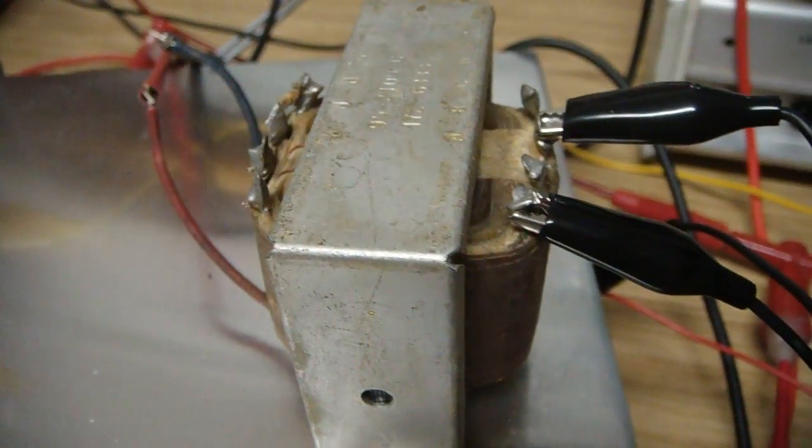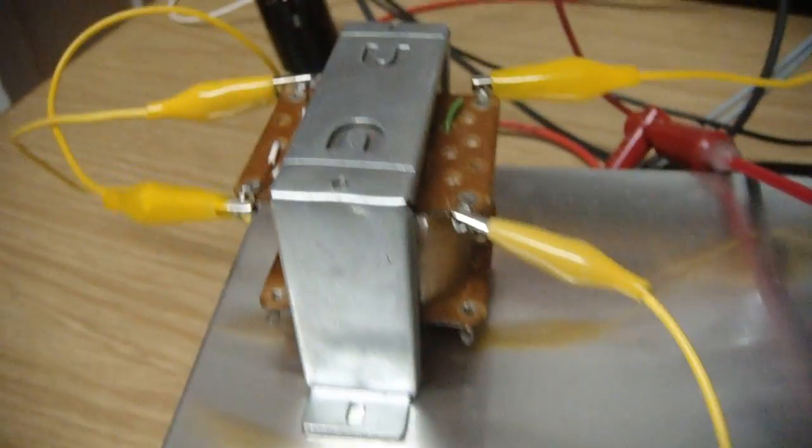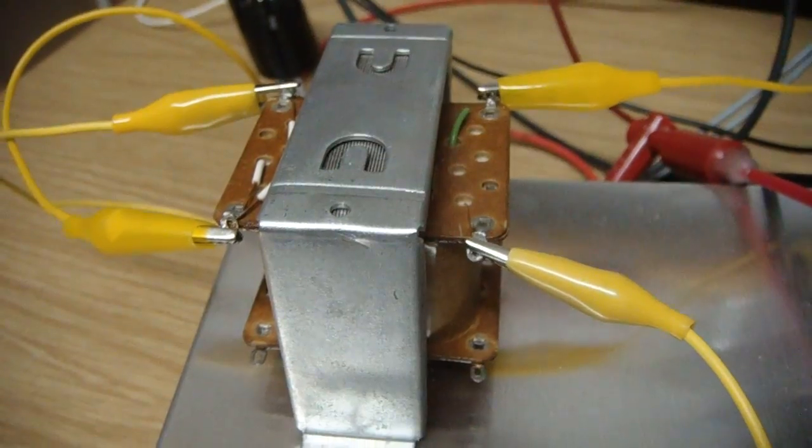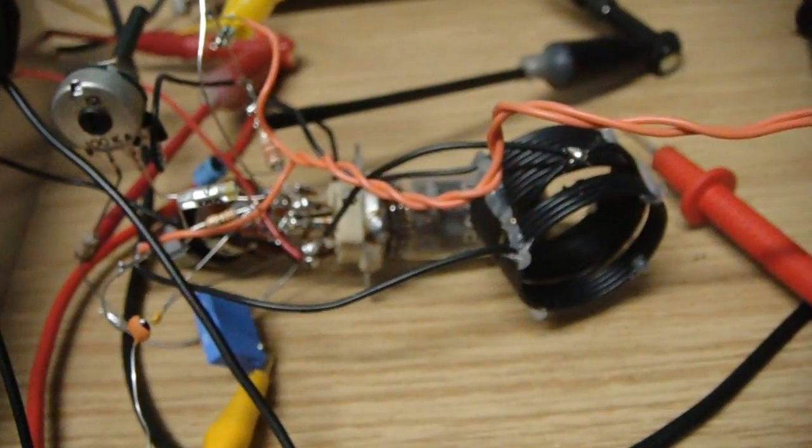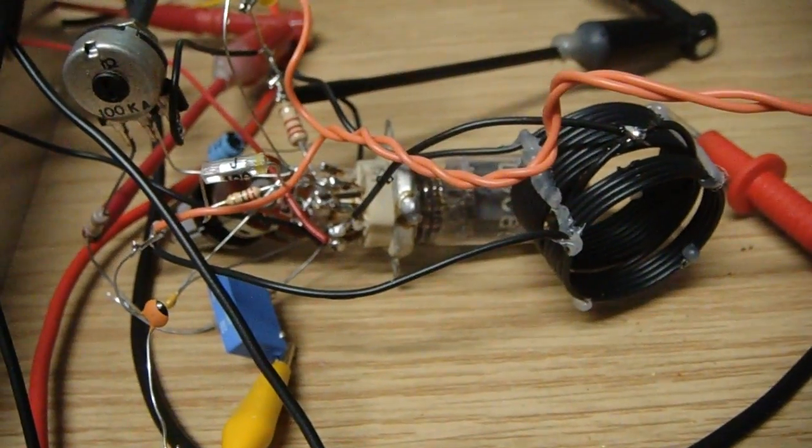I have this 6.3 volt transformer here, and this is the speaker output transformer, and here's a TV speaker. You can actually hear the sound in the background. There's no amplifier connectors, only one tube. It's a dual triode UCC85 from a television set.